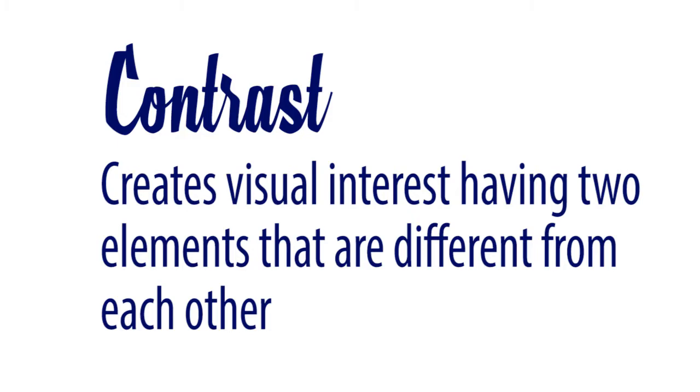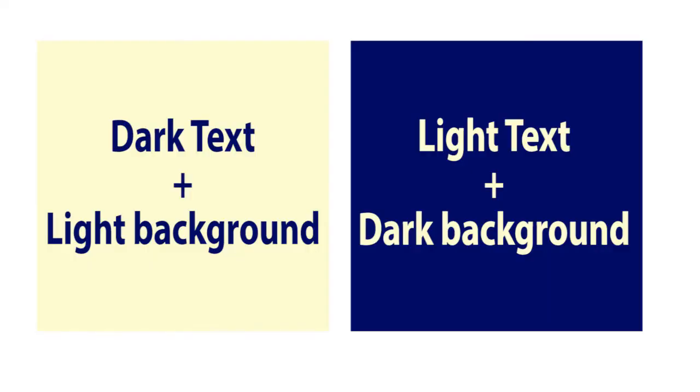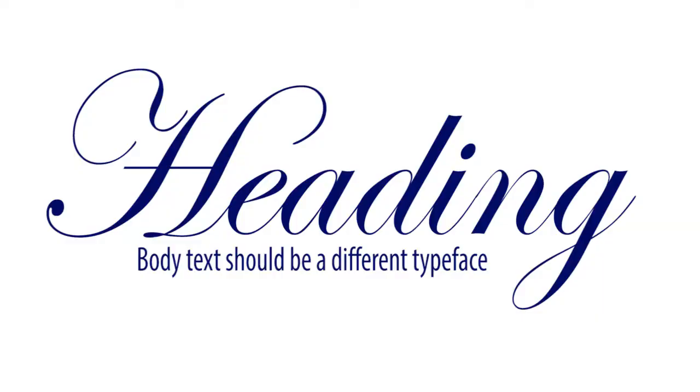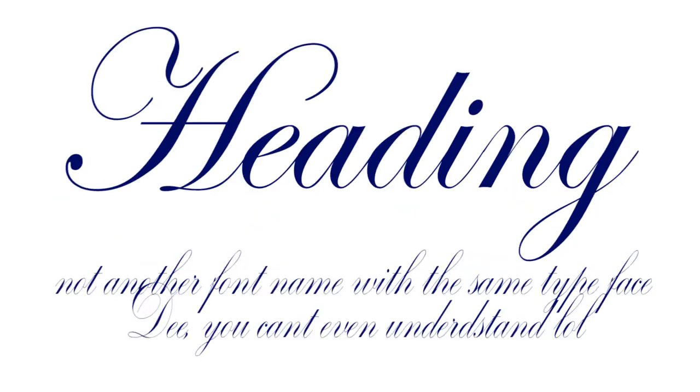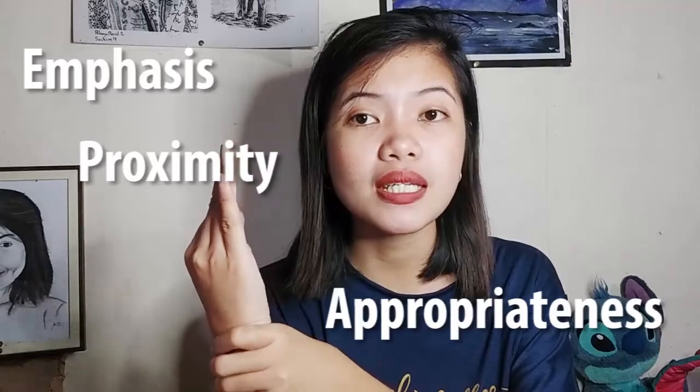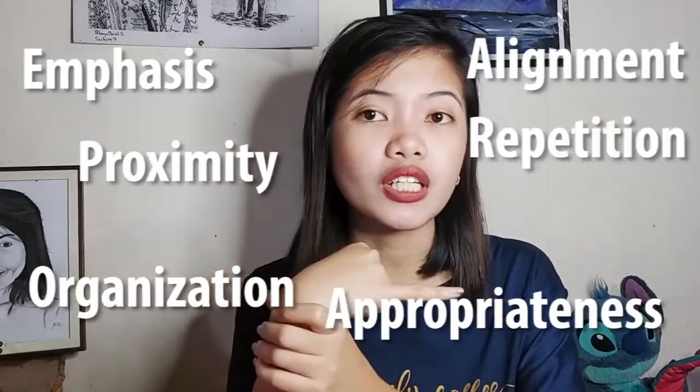And the last design principle is contrast — it creates visual interest by having two elements that are different from each other. If you are using a dark font color, then your background should be light. If your background is dark, you should use a lighter font color. In contrast, you can also make use of different typefaces, but again, only use a maximum of three. For example, if your heading uses a script typeface, your body should be either sans-serif or serif. So again, the design elements and principles in producing text information and media are: emphasis, appropriateness, proximity, alignment, organization, repetition, and contrast.